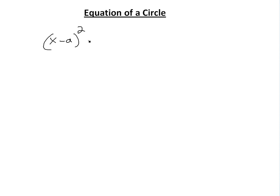Hi, it's time for another Math Easy Solution, here to discuss the circle. Basically, look at this equation and prove that the equation is actually of a circle. Here's the equation of a circle: if you have x minus a squared plus y minus b squared equals basically radius squared.